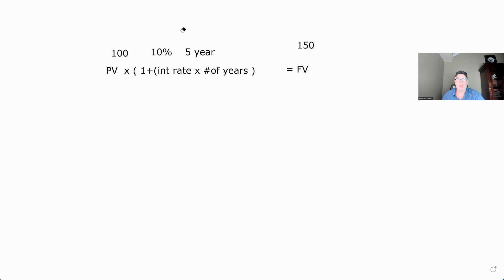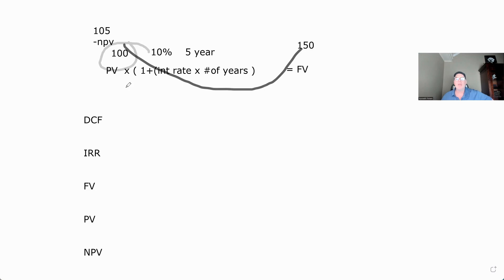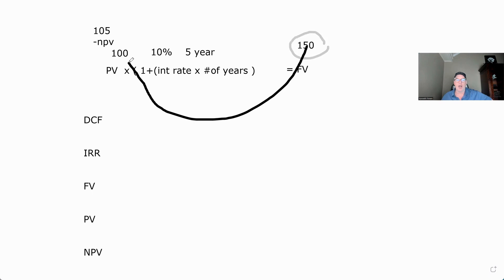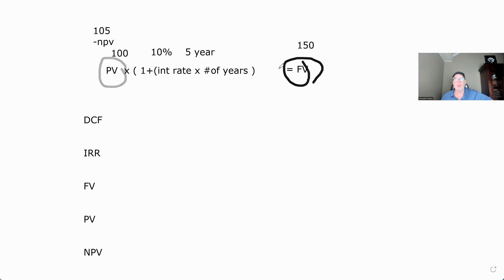Now let's say it costs $105 to buy it. That means you're paying more than what it's worth — that's a negative NPV, because you're comparing the market price to the present value of $100. You're paying more than present value, so you're going to make less than expected. If you invest $105 and get $150, you're doing worse than you should — you're technically losing money relative to what that future value represents.